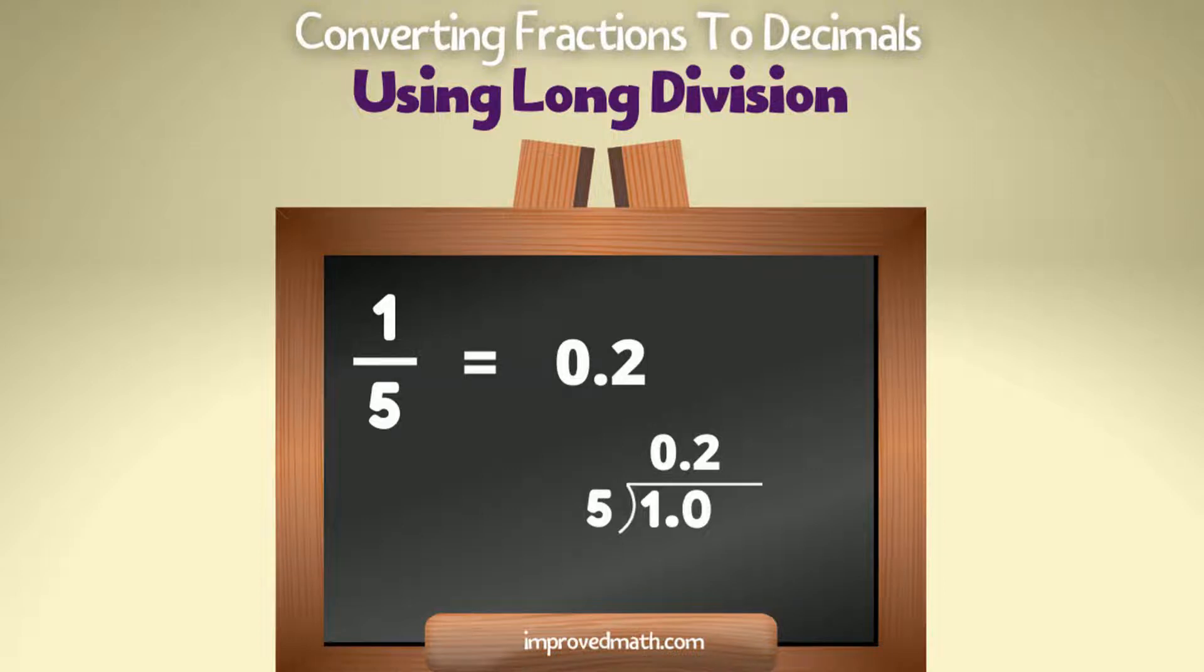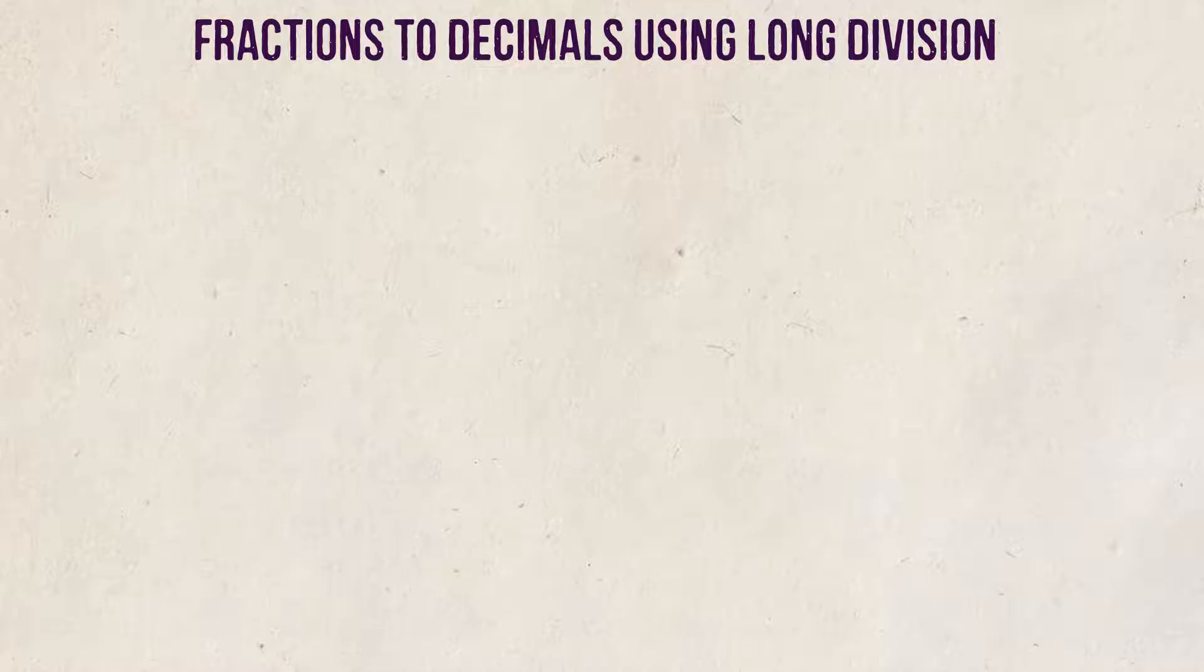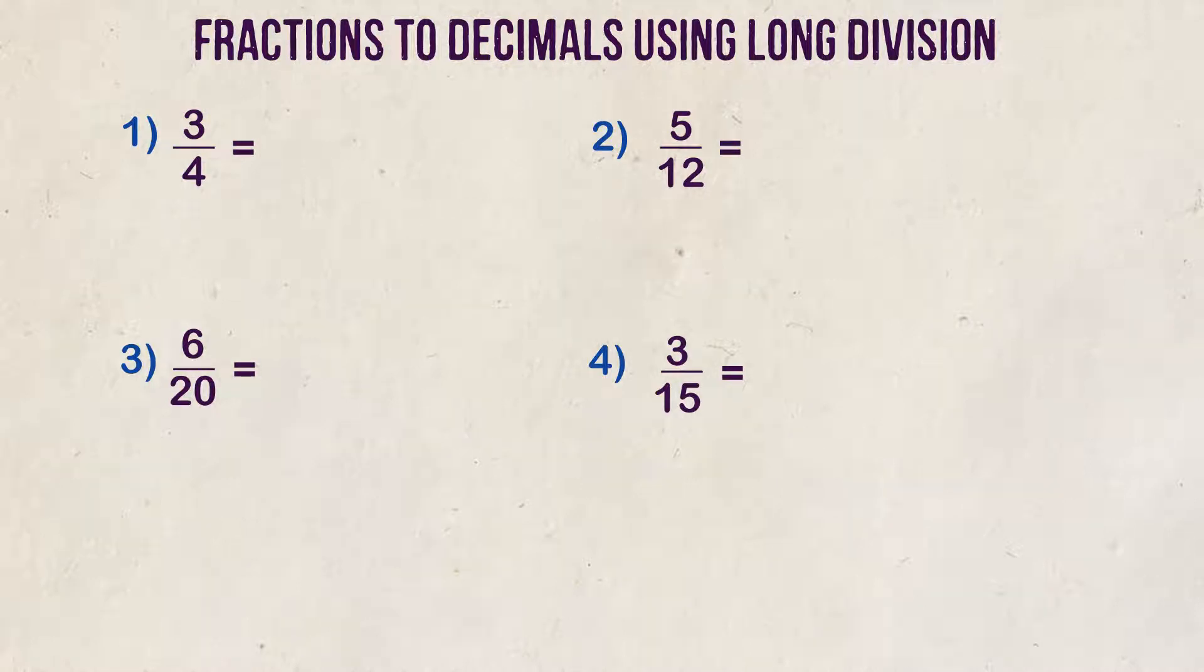In today's video, I'm going to show you how to convert fractions into decimals using long division. We're going to focus on proper fractions in this video. The definition of a proper fraction is a fraction that has a numerator that is less than its denominator. Proper fractions represent a piece of a whole or a number less than one, so we would expect our decimal number to be less than one also.